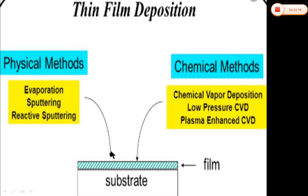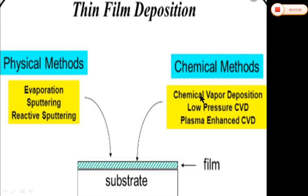Here is a substrate. Upon the substrate, both physical methods and chemical methods are applied. Our concern is to deposit a thin film on our substrate. The substrate is the surface upon which we deposit our thin film. From physical methods, the possible techniques are evaporation, sputtering, and reactive sputtering. From chemical methods, there are CVD, low pressure CVD, and plasma enhanced CVD.